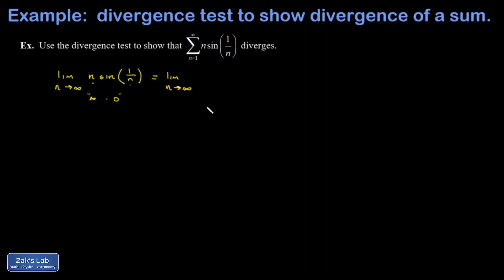If I can manipulate this into a fraction, then maybe I can qualify to use L'Hopital's rule. And this is the standard approach. And now I end up with a zero over zero indeterminate form. Because when n is large, 1 over n becomes close to zero.